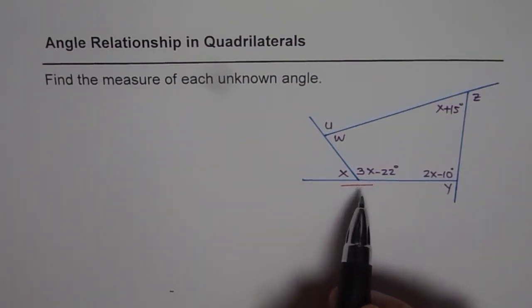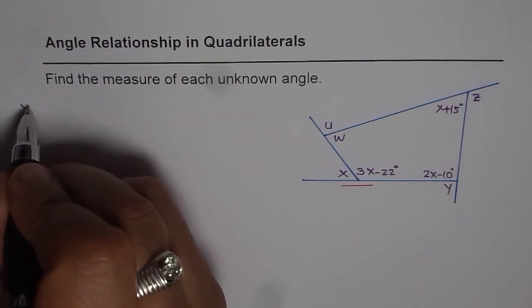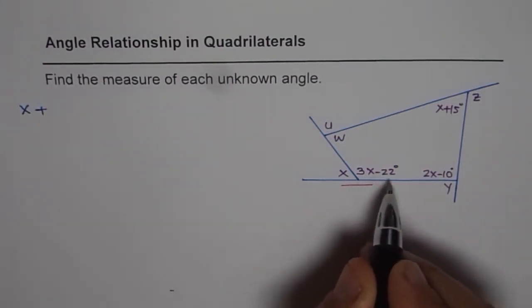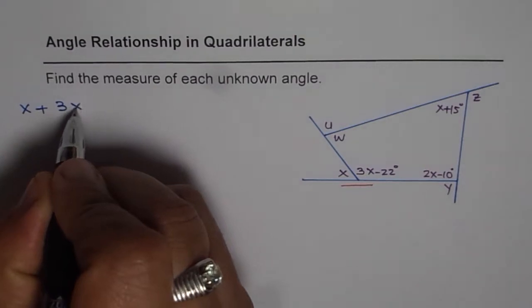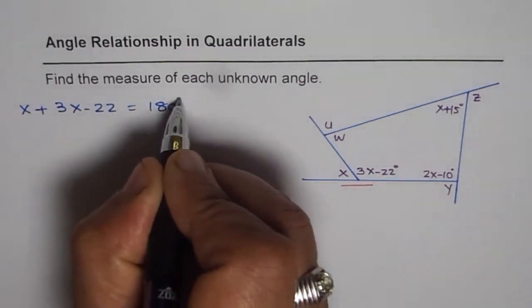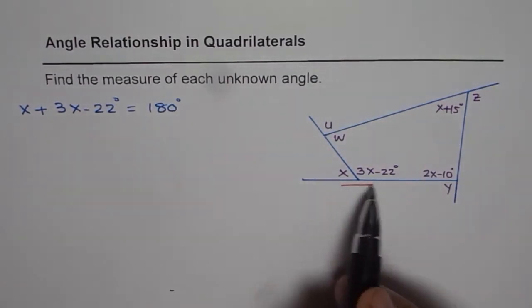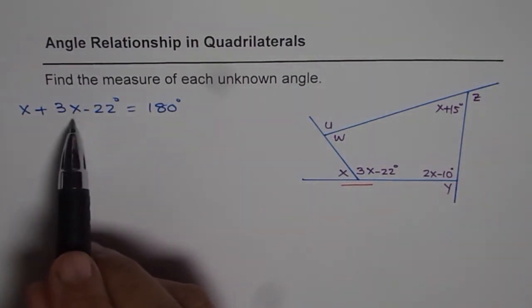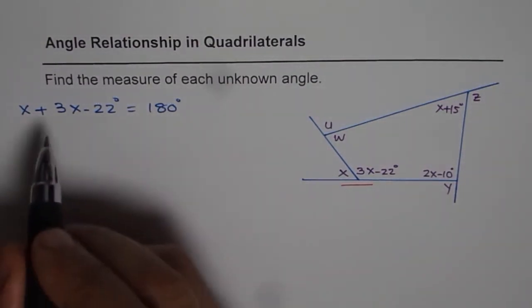So that's a linear pair. So x plus 3x minus 22 is equal to 180 degrees. So that is a linear pair and that helps us to find the value of x.